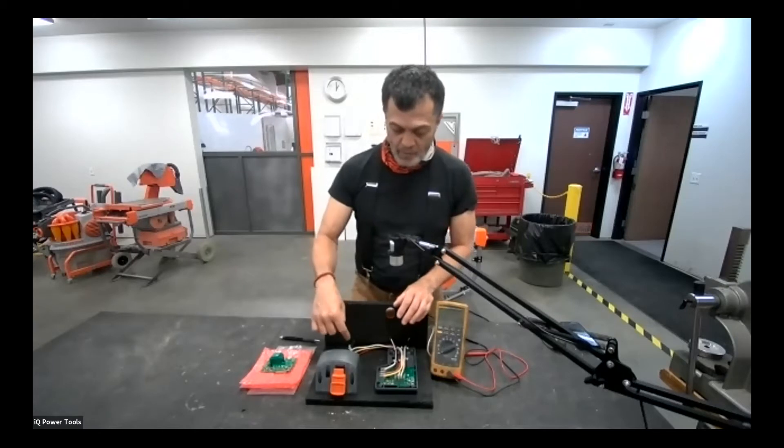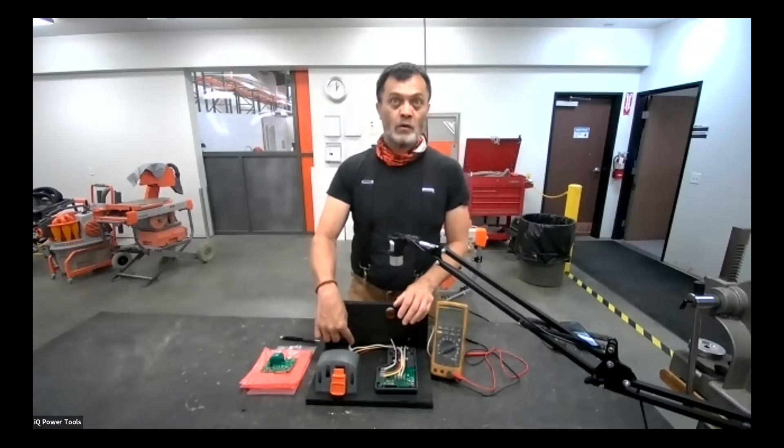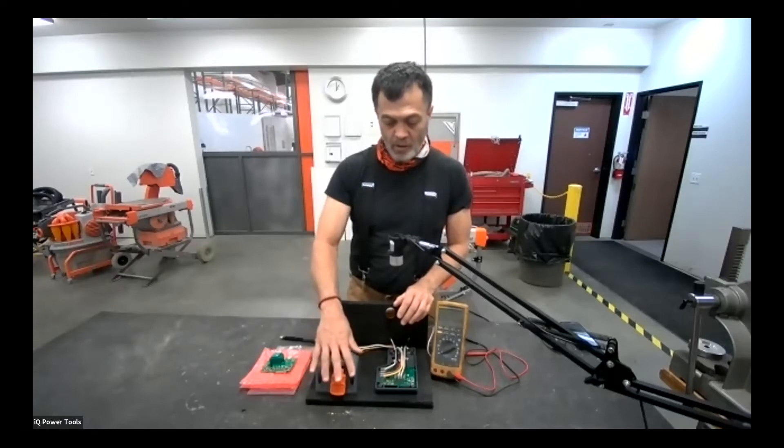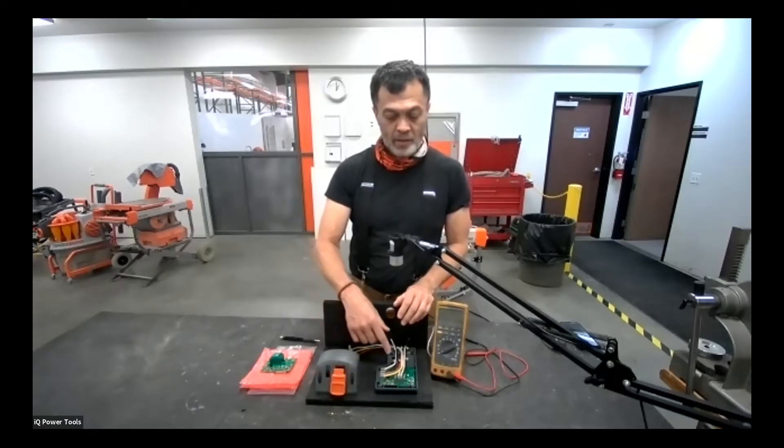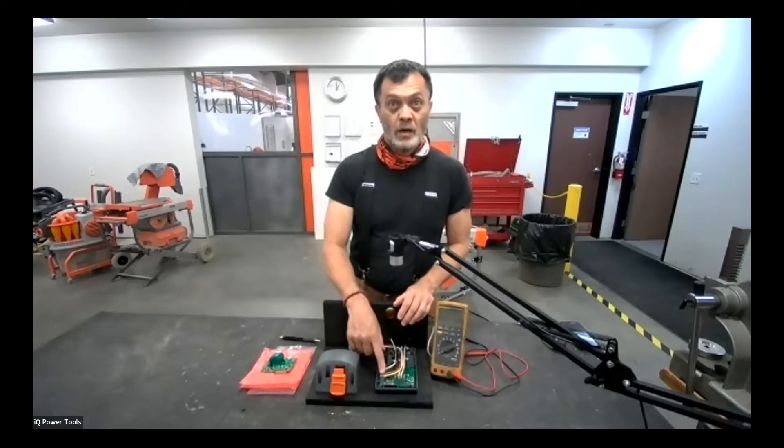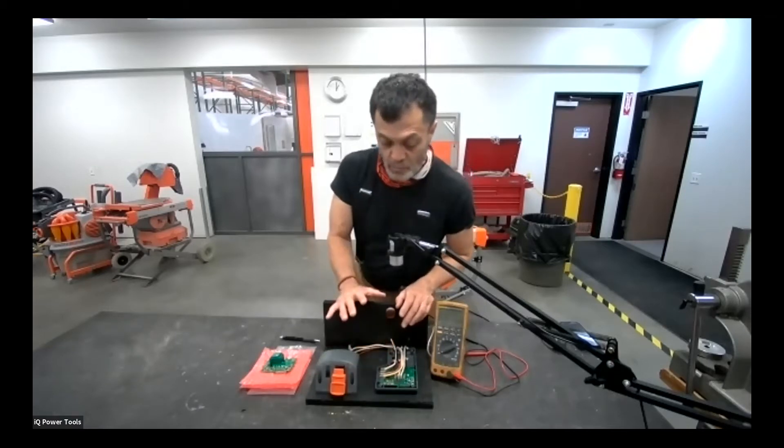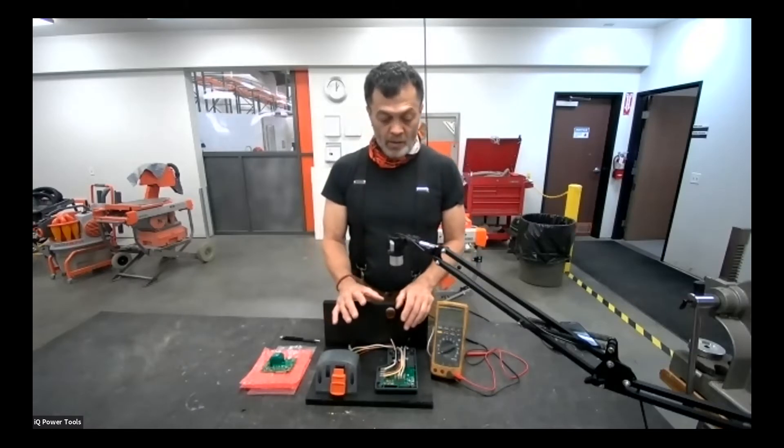Power comes in from the outlet or generator or whatever your power source is and it hits the start stop switch, the on and off switch, the big orange paddle that's on top of the saw itself. From the on and off switch, it is then fed to one side of the PCB which feeds the vacuum motor and it feeds the other side which feeds the saw motor. So that's the distribution portion of the PCB board.